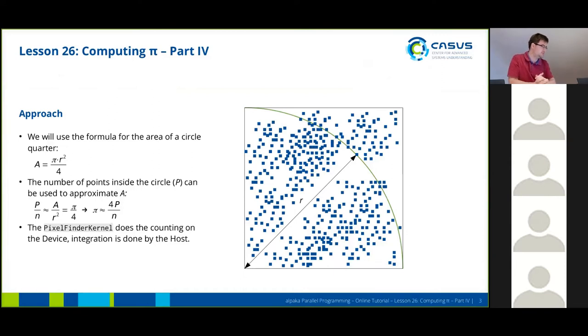We're going to use the formula for the area of a quarter of a circle and we can approximate the area by using the number of points inside the circle, using the formula you see at the second bullet point here.